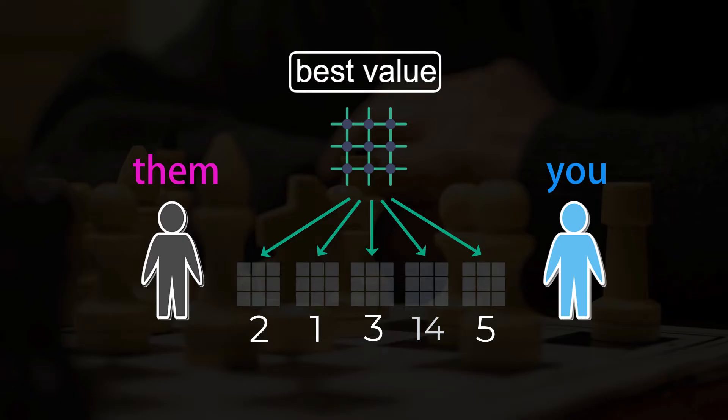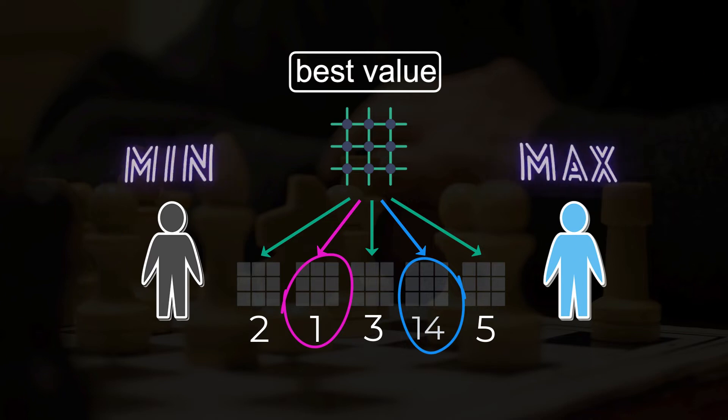If it's your turn, you would pick the one with the highest number. But an opponent would pick the one with the lowest number. These preferences give rise to the traditional names Max and Min.